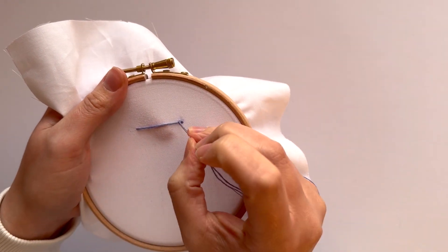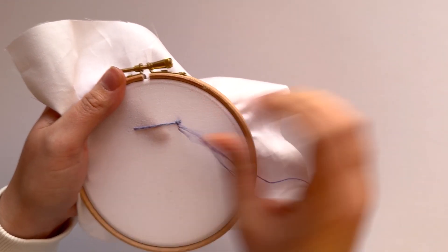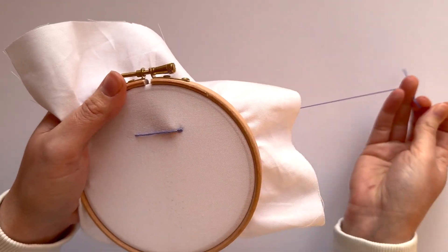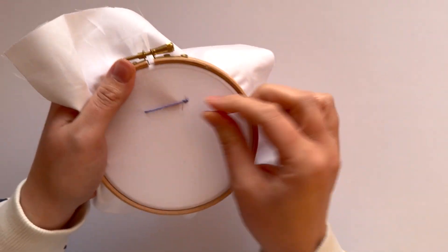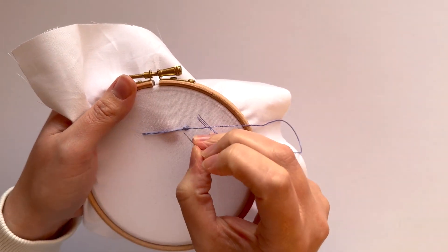Or you can just do them next to each other, whatever works for you really. I kind of like leaving a little gap and going back in, that's how I normally stitch satin stitch. I just think it's a little bit easier to do that.